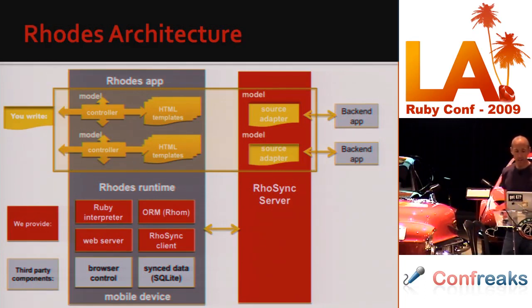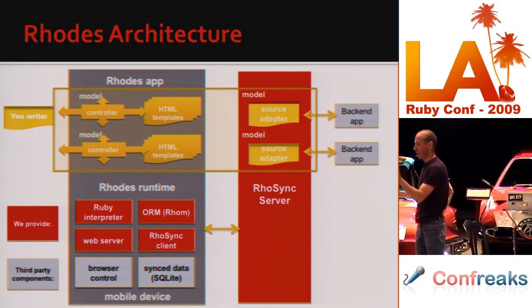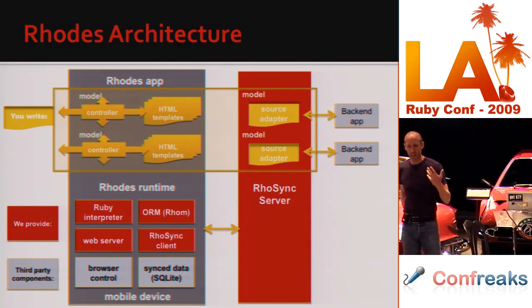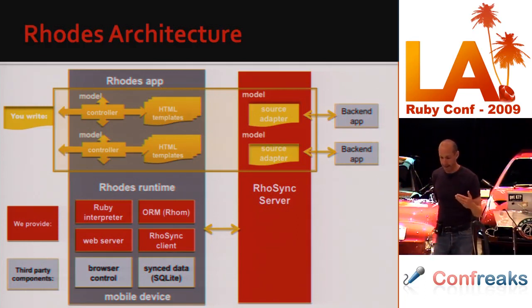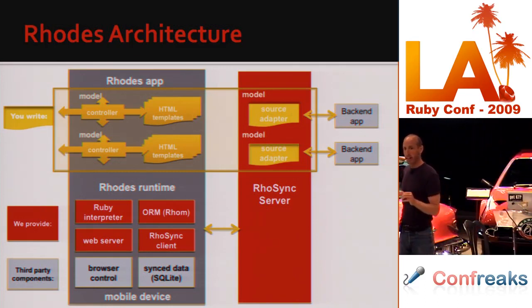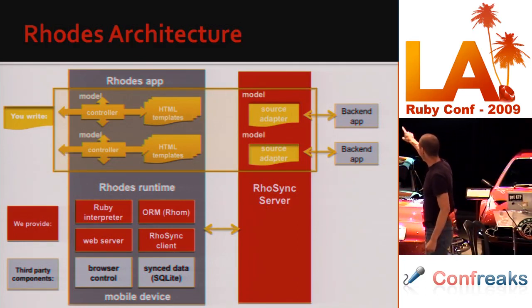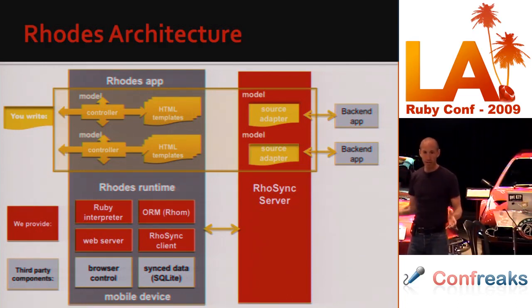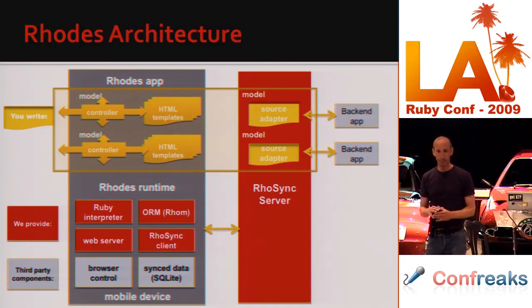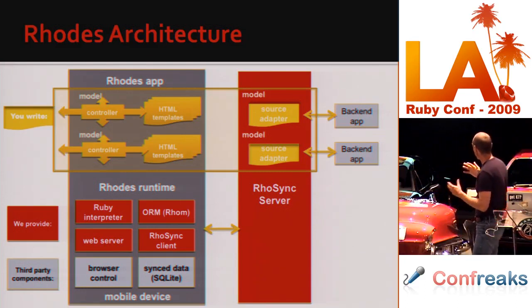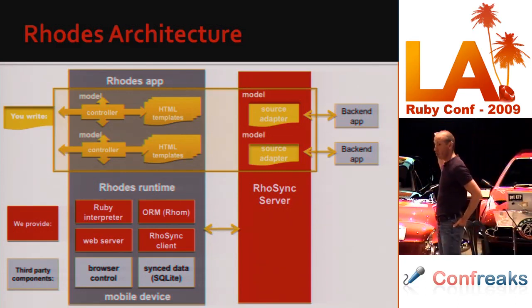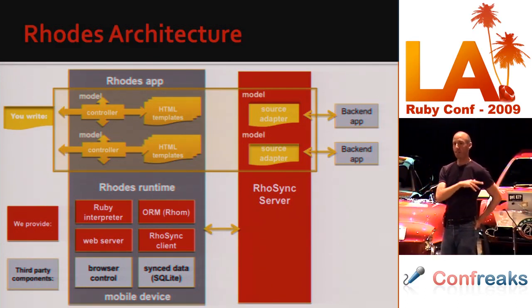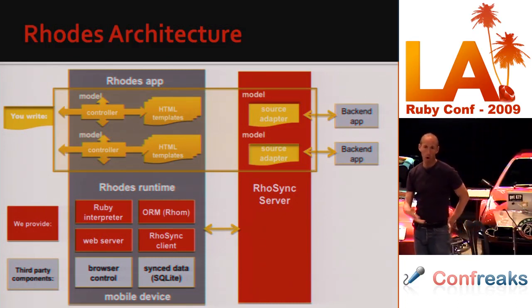As a developer, you write everything in the generated gold layer. An app generator creates files for every object you care about — say you're doing a CRM app with accounts, employees, opportunities, and contacts. You run the model generator for those, and for each model you get a controller and HTML templates. You generally don't need to modify the controller — it has basic create, read, update, and delete operations — but you will probably end up modifying the HTML templates.